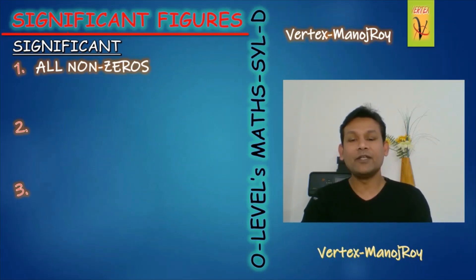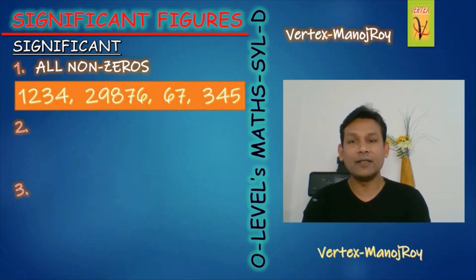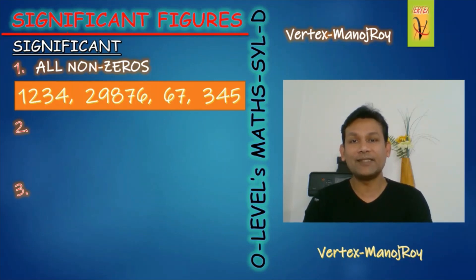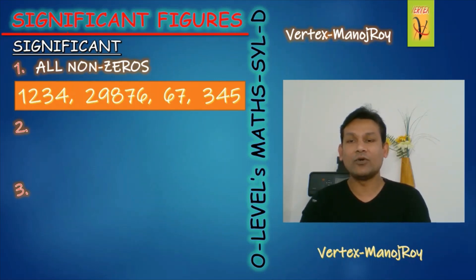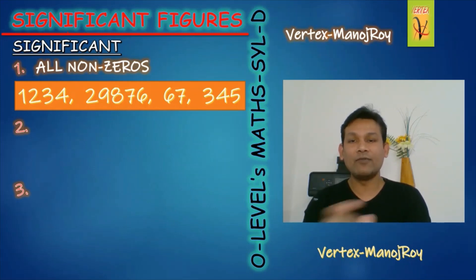It means if there is no zero digit in the numbers, all will be significant. Like 1, 2, 3, 4 — the first has four significant figures. The second is five, and the third is three significant figures.